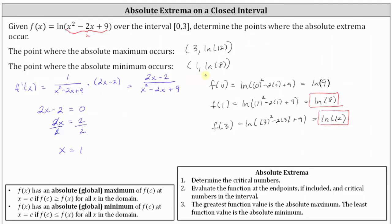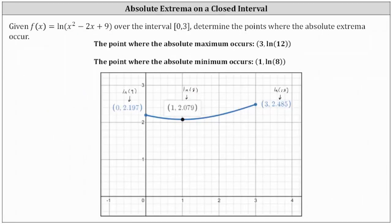Let's verify this graphically. Here we have the graph of the given function over the closed interval from zero to three. The highest point on the graph is the right endpoint, which is (3, ln 12) — natural log 12 is approximately 2.485 — confirming the absolute maximum at x equals three. The lowest point is (1, ln 8) — natural log eight is approximately 2.079 — confirming the absolute minimum at x equals one. I hope you found this helpful.